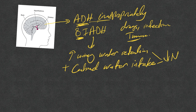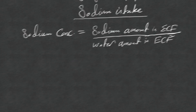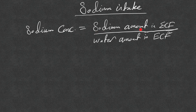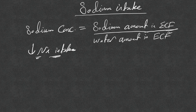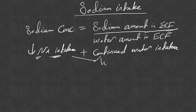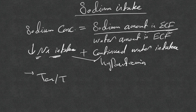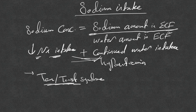What if there is decreased sodium intake? By itself, it will not cause clinically relevant hyponatremia, but if associated with continued water intake, both together will lead to hyponatremia. A clear example is what we call tea and toast syndrome — a diet with a very low solute and sodium load — which can lead to hyponatremia if there is continued water intake.